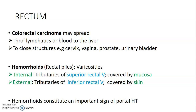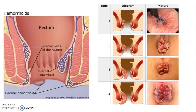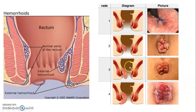Hemorrhoids are usually an important sign in portal hypertension. These are internal hemorrhoids within the anal canal; external hemorrhoids go outside the anal canal. This is how it looks.